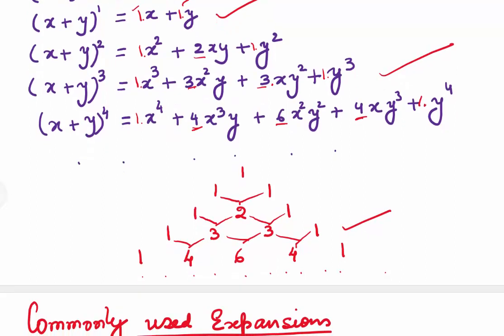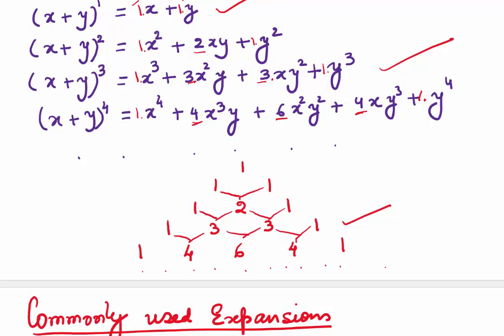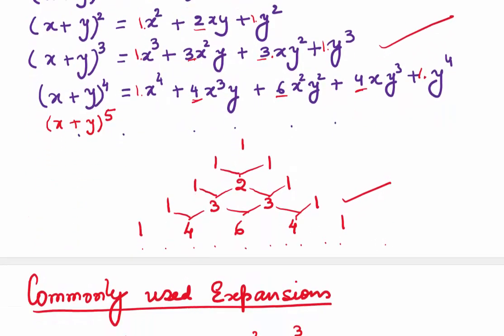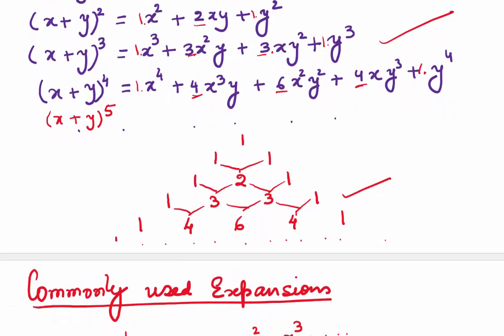If we want to find the coefficients for x plus y to the power 5, we start with 1. Then 1 plus 4 is 5, 4 plus 6 is 10, 6 plus 4 is 10, 4 plus 1 is 5, and 1. So the coefficients for the expansion of x plus y to the power 5 are 1, 5, 10, 10, 5, 1.